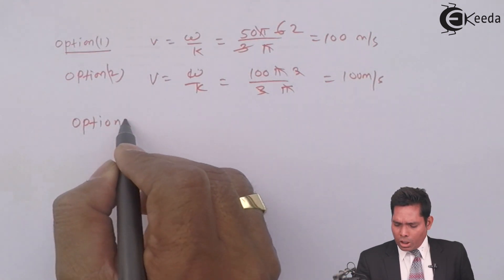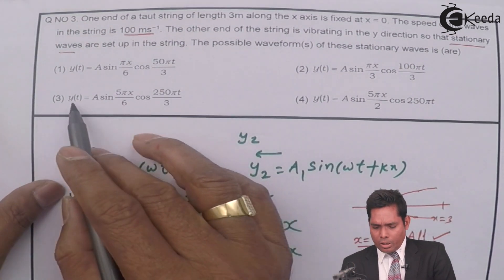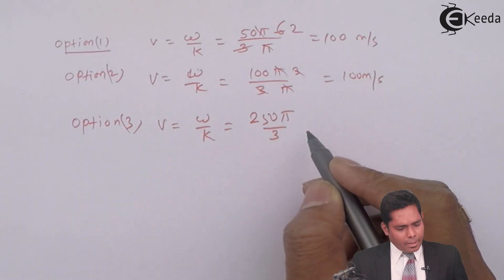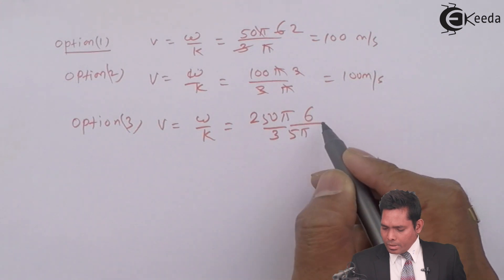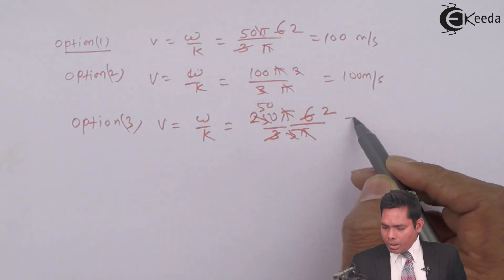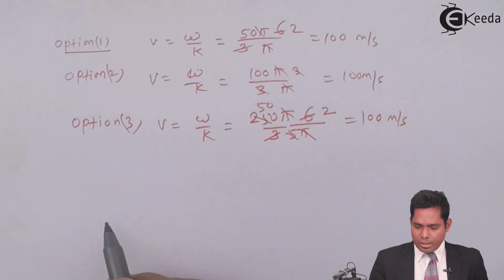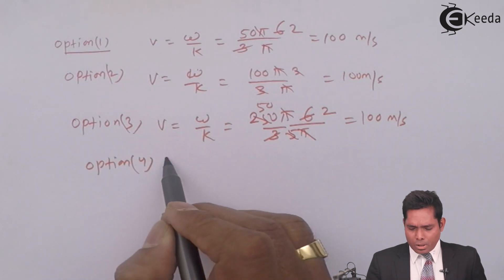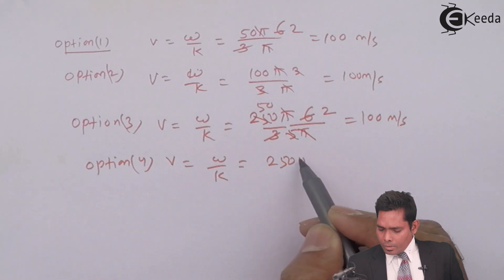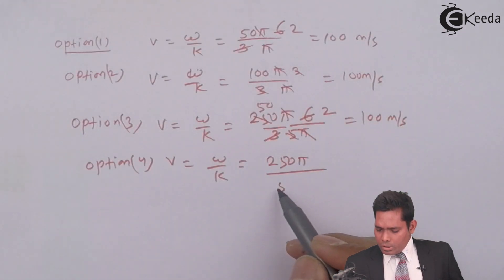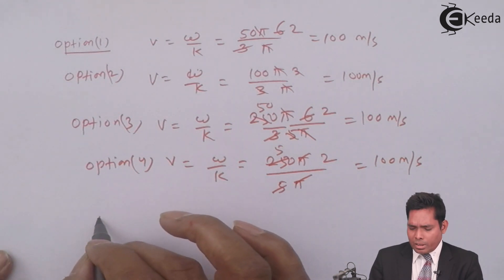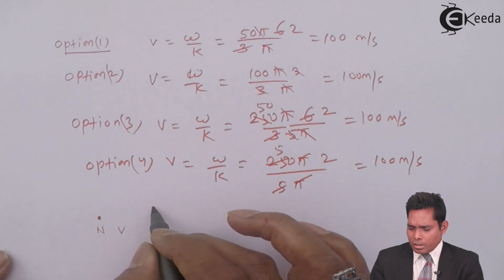For option 3, velocity = ω/k = (250π/3)/(5π/6) = 100 m/s. For option 4, ω = 250π and k = 5π/2, giving velocity = 250π/(5π/2) = 100 m/s. So all four options satisfy both the node condition at x = 0 and the wave velocity condition of 100 m/s.